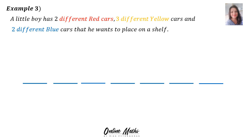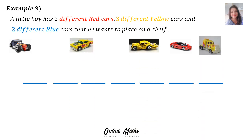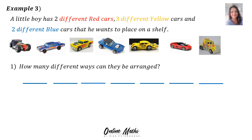Example 3: a little boy has 2 different red cars, 3 different yellow cars and 2 different blue cars that he wants to place on a shelf. How many different ways can they be arranged? First, we need to decide how many cars there are in total: 2 plus 3 is 5, plus 2 is 7. That is why there are 7 spaces. In the first space there are 7 options, then 6, 5, 4, 3, 2, 1. That translates to 7 factorial, and the answer is 5,040 ways.